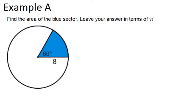In example A, it says find the area of the blue sector. Leave your answers in terms of pi. So what we're given is that the radius of the circle is 8, and the sector we're looking for is 60 degrees, has a central angle of 60 degrees.